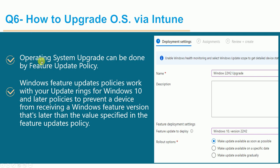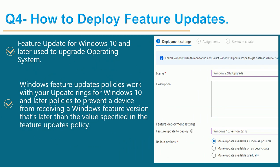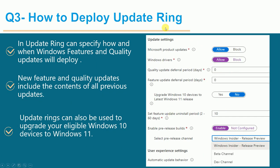Question six: how to upgrade the operating system. OS upgrades are done using the feature update policy — this is the same feature I explained in the previous question. Question seven: what are the Windows Insider channels? There are three types: the dev channel (formerly fast ring), the beta channel (formerly slow ring), and the release preview channel. These three channels are selectable when deploying update rings.